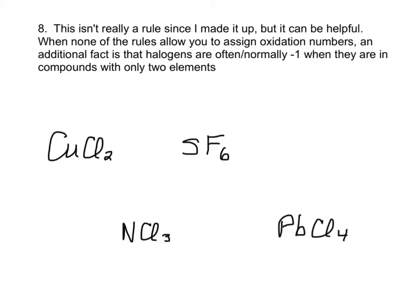Now, there's one more rule, which isn't really a rule, because I kind of made it up. But it can be helpful. Every once in a while, you run across a compound where you're just not sure where to start, because none of the rules apply. But if it has a halogen in it, they are often normally almost always -1. So copper and chloride, there's no rule to apply to that. But if we assume that chloride is -1, then copper is +2. And that is actually true.